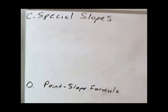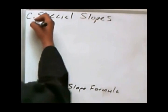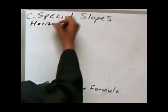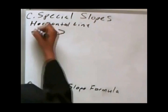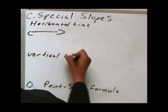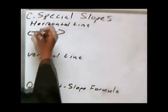Next, let's talk about special slopes. Before, I gave you the slope first and then showed you what the line looks like. For special slopes, I'll show you what the line looks like and then we'll develop the slope. There is the horizontal line and the vertical line.